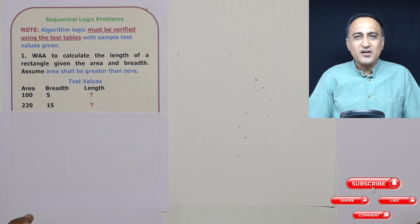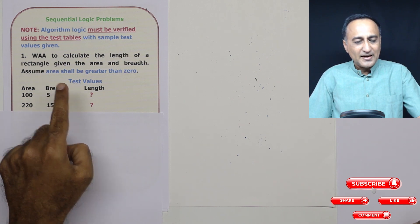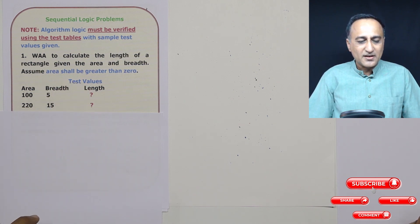I slightly twisted it to ask you to calculate the length assuming area and breadth are given. We know area of a rectangle is length times breadth, so length is area divided by breadth.